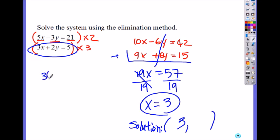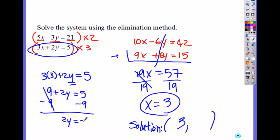x is 3. So 3 times x plus 2y equals to 5. Now I'm solving for y. So it's 9 plus 2y equals to 5. So minus 9 from both sides. So I get 2y equals to negative 4. So when you divide by 2, y equals to negative 2.